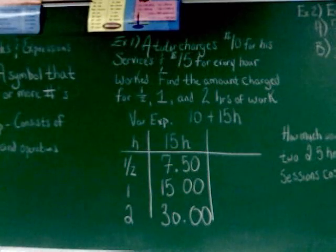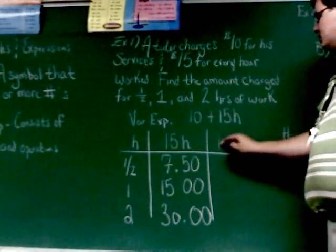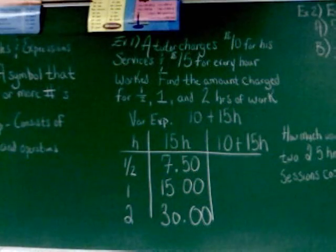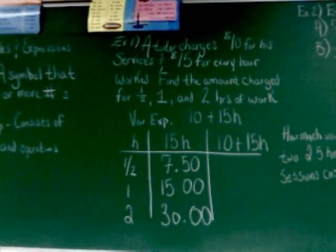Now what they want you to do in the last box is now finish it by adding in the ten. So in this box, we put the ten plus fifteen H. Now, as I said before, most of you probably will not do it this way. Most of you will probably just go right to figure it out. You're not going to do the H thing and then add in the ten later on. And that's fine.